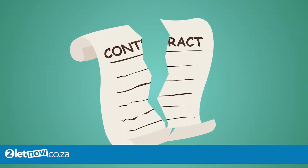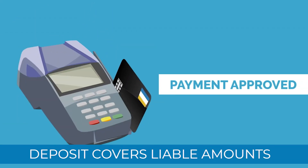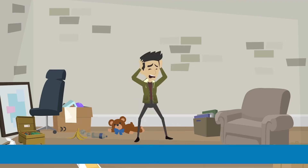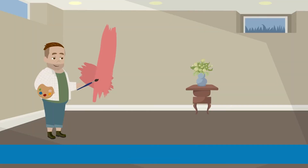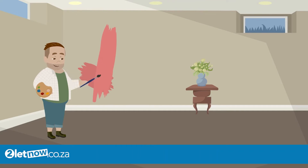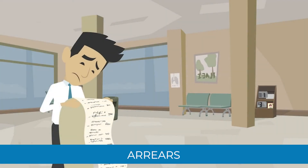When your lease agreement is terminated, the landlord may use the deposit to cover any amounts that you may be liable for. This may include the reasonable cost of repairing any defects caused to the premises, including the repainting of the unit should any marks, chips or scratches be visible on the walls, replacing lost keys and any rental fees in arrears.